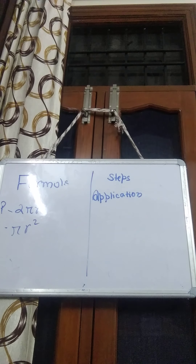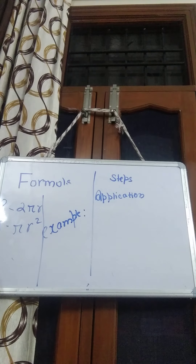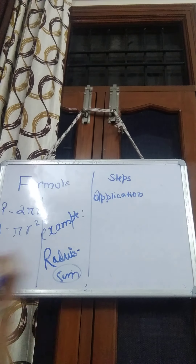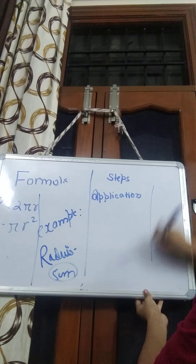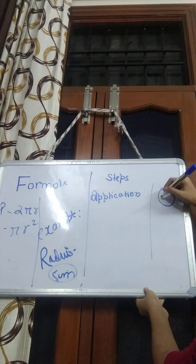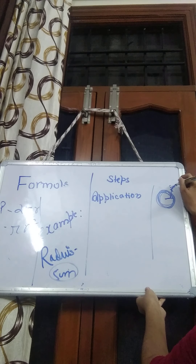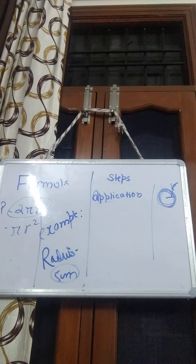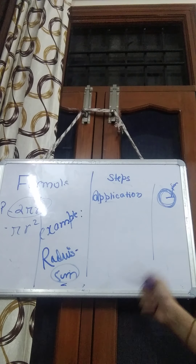Now I'll explain with an example — you can note this down in your notebooks. In a question, I have a circle with a radius of 5 centimeters and I have to find its circumference. First, it helps to draw a rough diagram — here is my circle, with the radius of 5 cm from the center. Now we'll apply the formula 2πr. I recommend using 3.14 for pi here, since 5 is not divisible by 7.